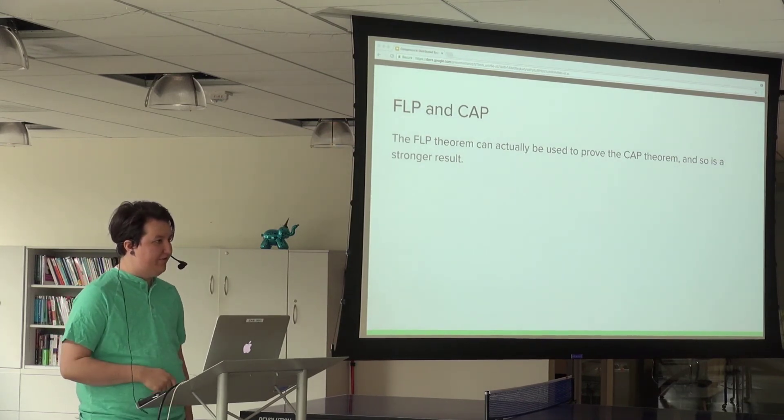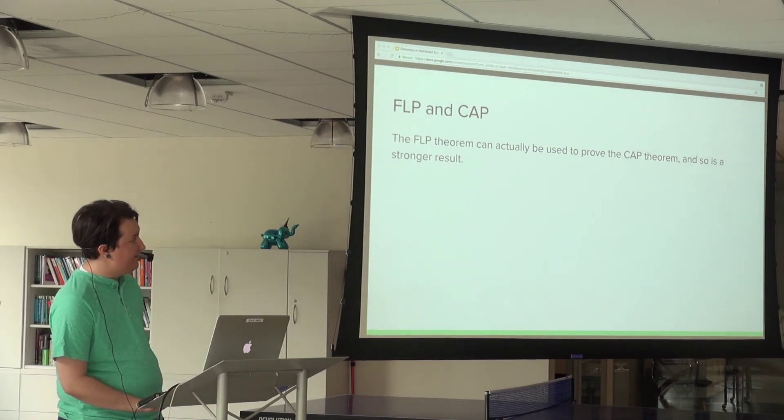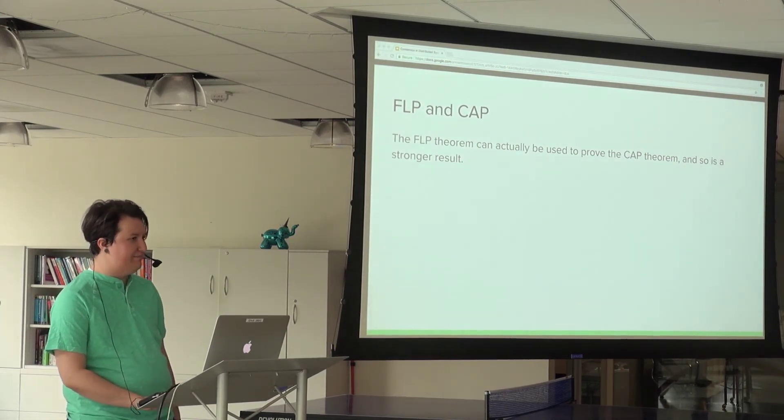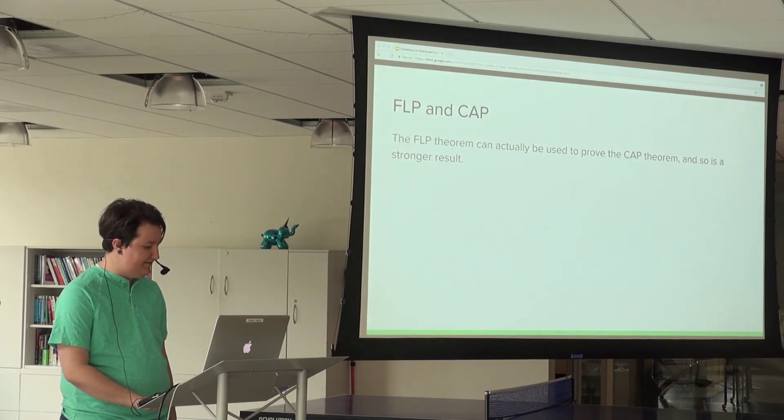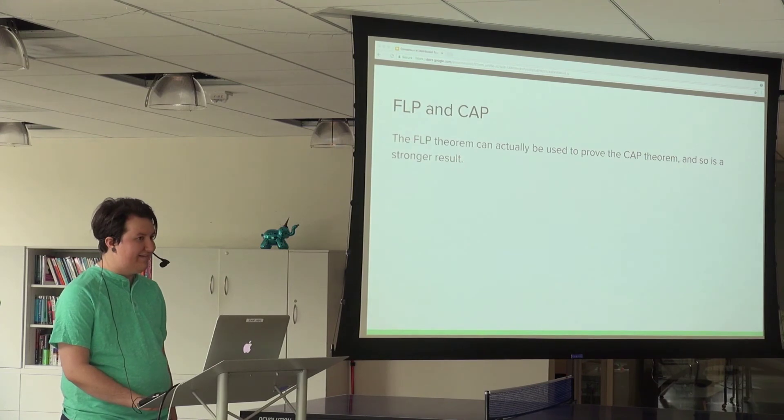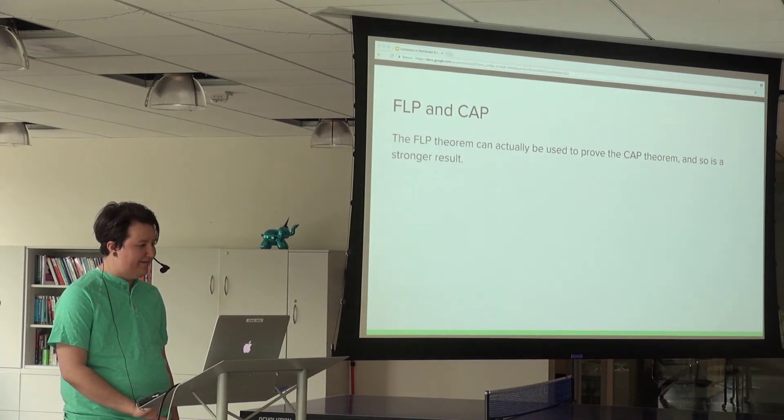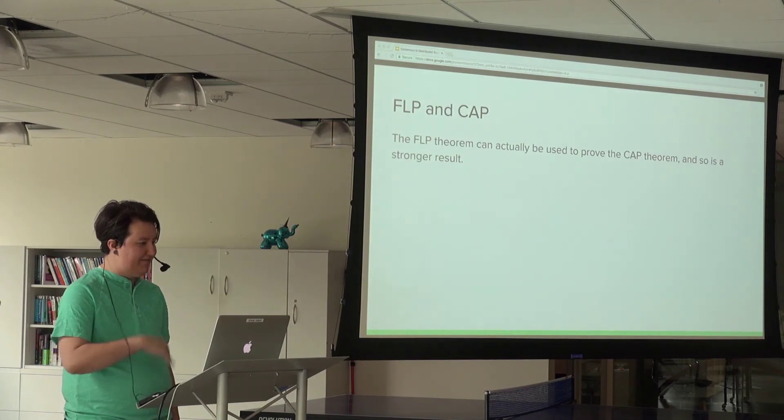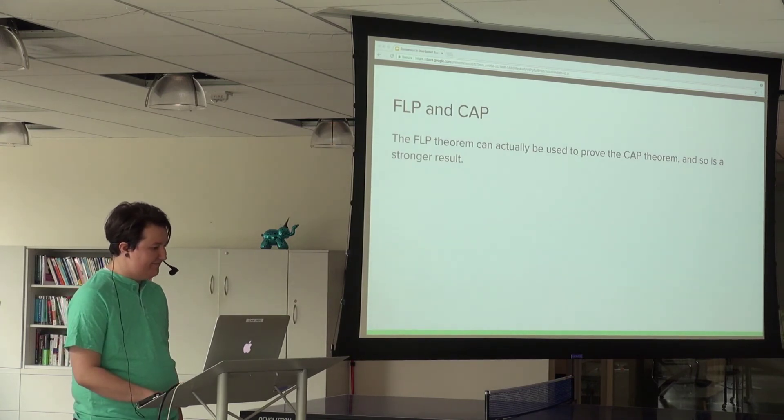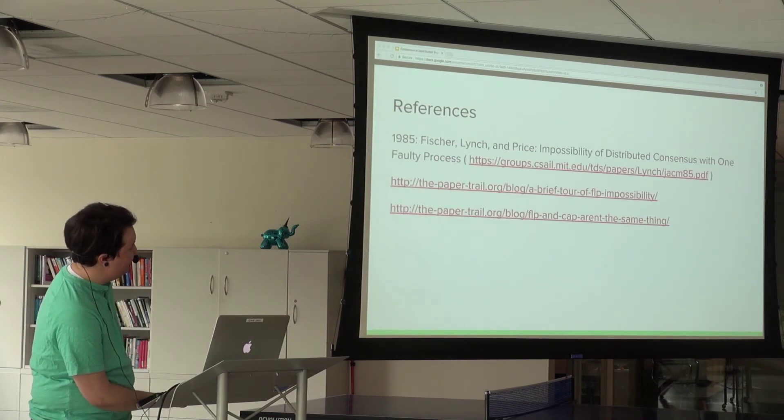Another difference: FLP assumes all messages will eventually get there. CAP allows messages to be dropped entirely. Because the conditions for consistency and availability by CAP's definition are so strong, it's actually a weaker theorem. You can use the FLP theorem to prove the CAP theorem, but you cannot do the reverse. FLP is not talked about much these days, but I think it's a really surprising and interesting result.